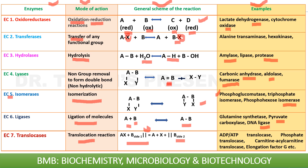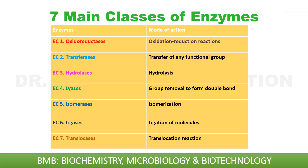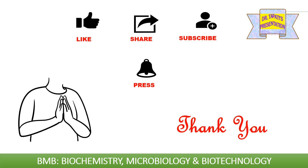So, all these are about the seven classes of enzymes. Remember the seven main classes using the mnemonic 'OTHLILT': oxidoreductases, transferases, hydrolases, lyases, isomerases, ligases, and translocases. Thank you very much for watching this video. Kindly like, share, and subscribe to this channel. For further notifications, don't forget to press the bell icon.